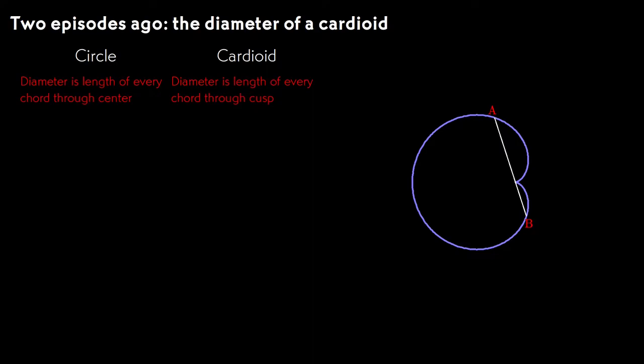Just as the diameter of a circle is the length of every chord through the center, the diameter of a cardioid is the length of every chord through the cusp. The circumference of a circle is pi times the diameter. The perimeter of a cardioid is 4 times the diameter. The area of a circle is 1 fourth pi times the diameter squared. The area of a cardioid is 3 eighths pi times the diameter squared.